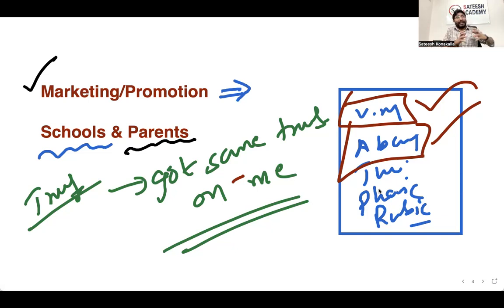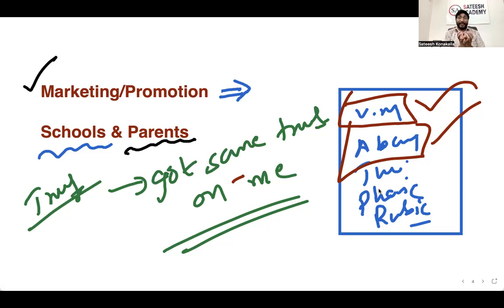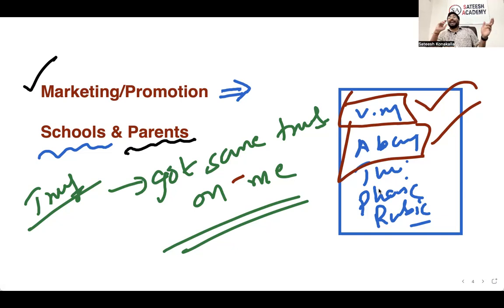Even if a parent has only one child — if one parent comes, maybe their neighbor is eligible for Abacus, or their sibling's child is eligible. Through one customer you get many customers for Abacus or Vedic Maths. You are doing marketing and promotion for one thing but getting two outcomes. If you have both, Abacus students can refer Vedic Maths students and vice versa.